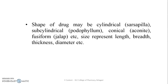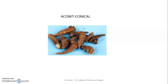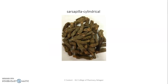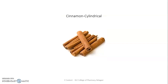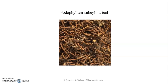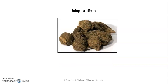Size represents the length, breadth, thickness, and diameter of the drug. Here you can see the conical shape of the aconite drug. Sarsaparilla has a cylindrical shape, and cinnamon also has a cylindrical shape. Podophyllum is sub-cylindrical, and jalap is fusiform.